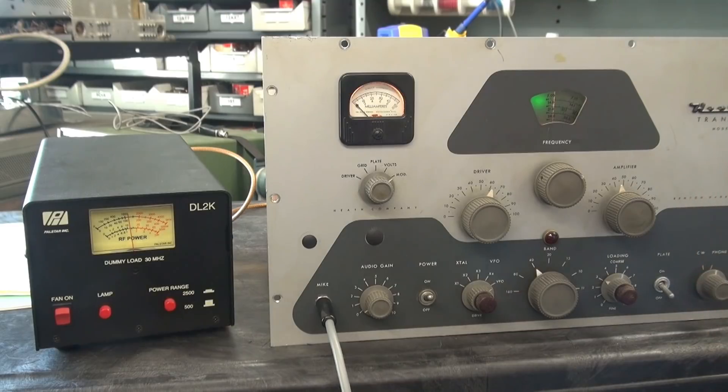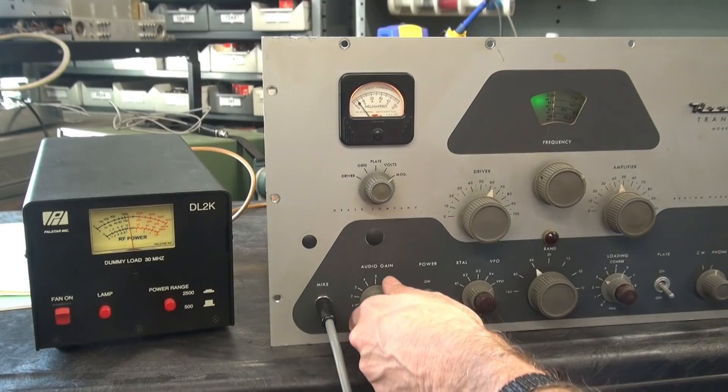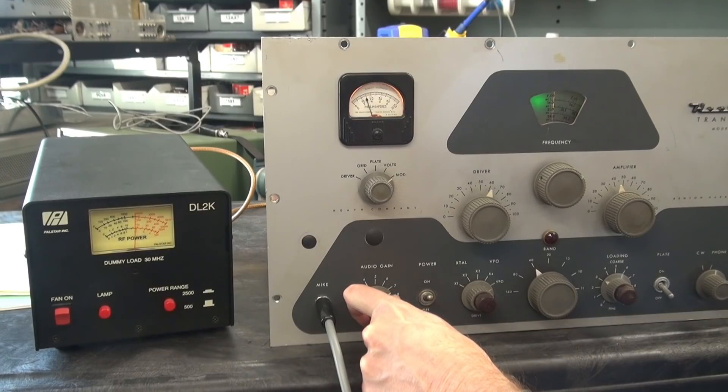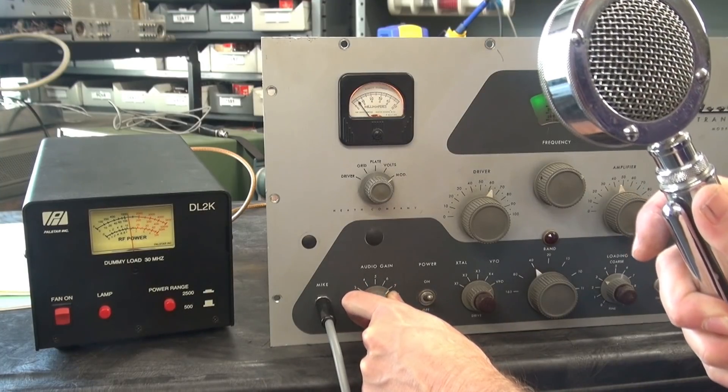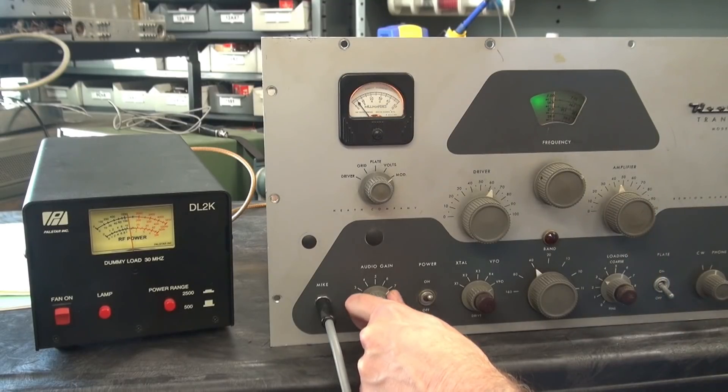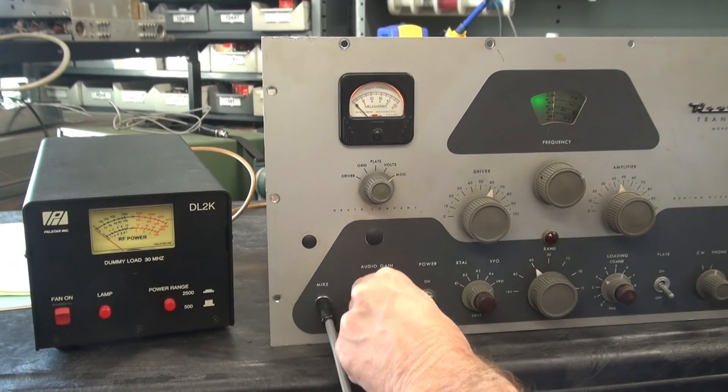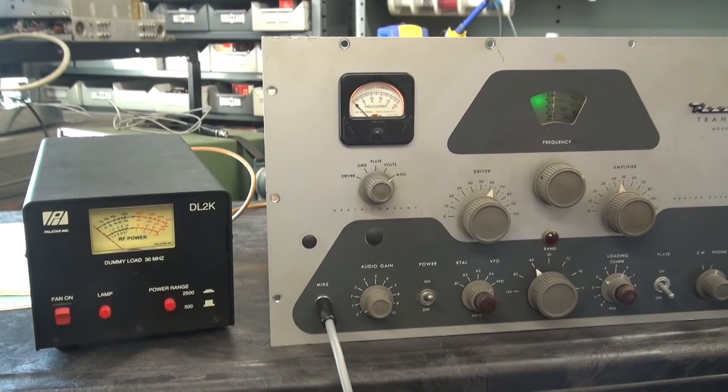So we're in AM. Let's bring up some modulation. Oh yeah, she's talking. This is an unamplified D-104 mic. Plenty of audio. I can hear myself out of the tubes. That's a good sign. And look at that forward modulation on the wattmeter. The DX-100 is working.